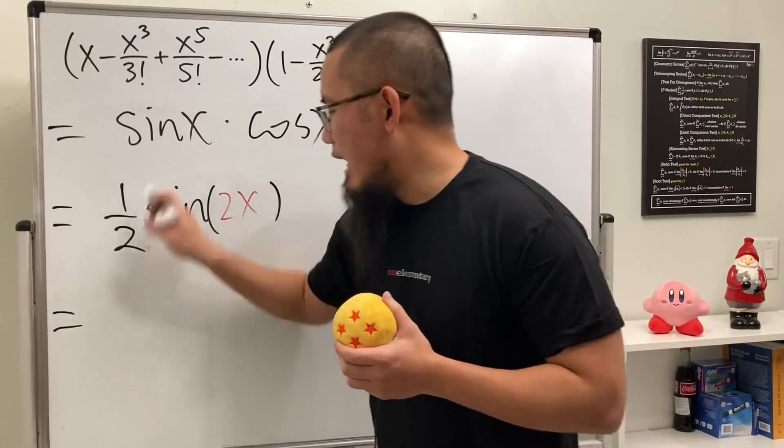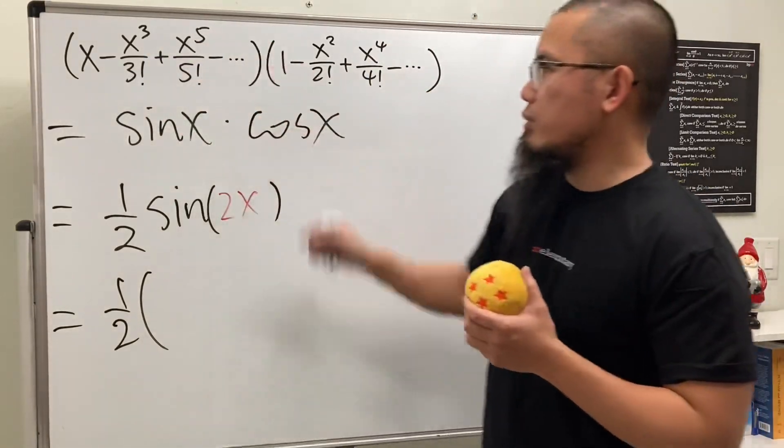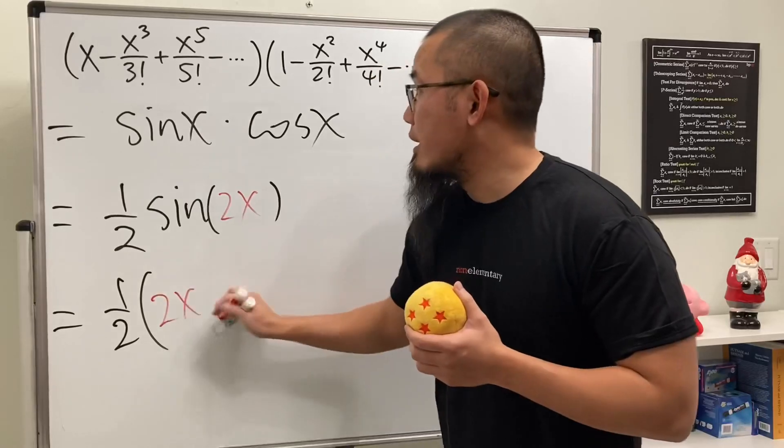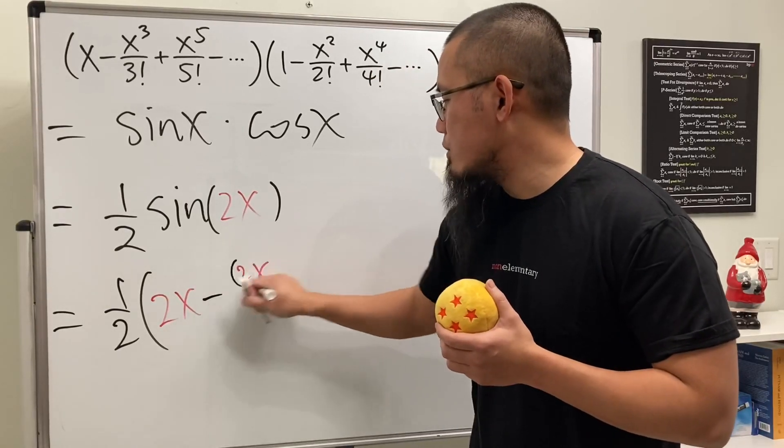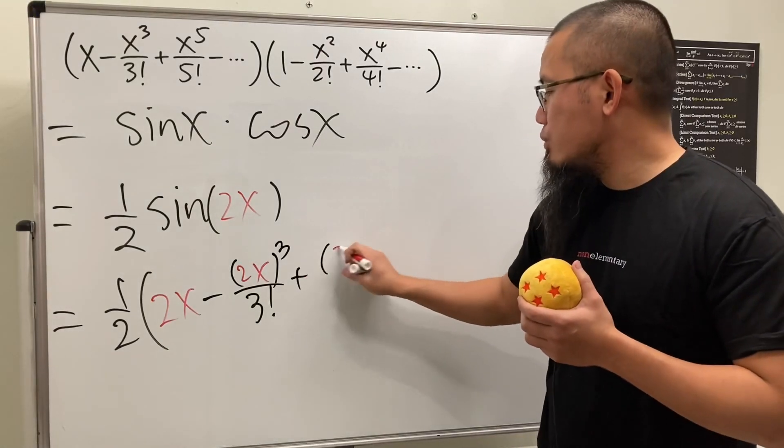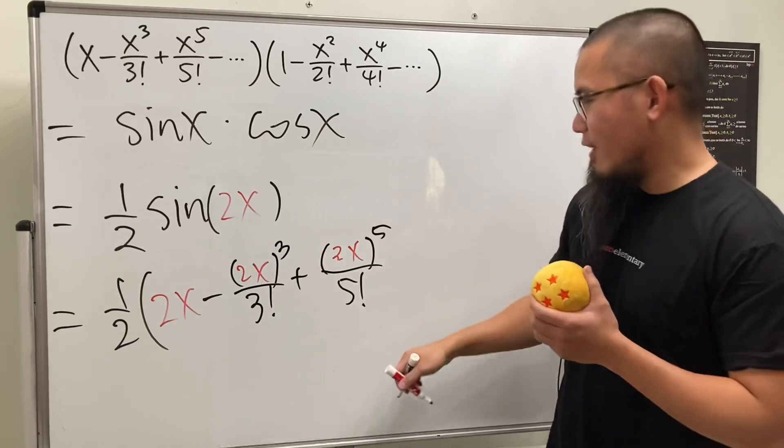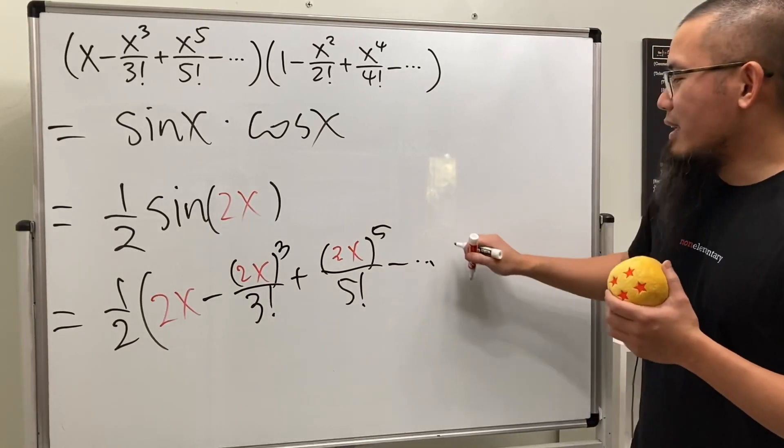And check this out. We have the 1/2 all the way in the front. And sine of 2x, we can just put 2x into all these x right here. So we get 2x right here and then minus 2x raised to the third power divided by 3 factorial plus parentheses 2x to the 5th power over 5 factorial and plus dot, dot, dot, all that stuff.